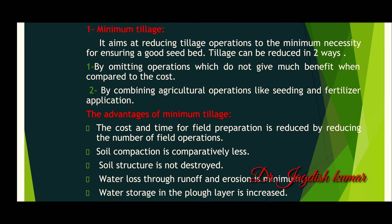Now we come to minimum tillage. Since it aims at reducing tillage operations to the minimum necessary for ensuring a good seed bed, tillage can be reduced in two ways: first, by omitting operations which do not give much benefit compared to the cost; second, by combining agricultural operations like seeding and fertilizer application.